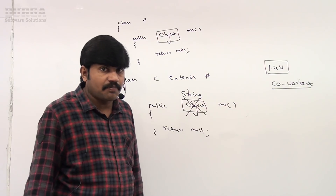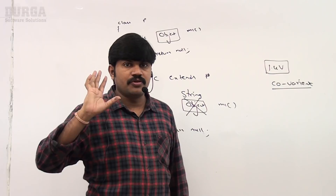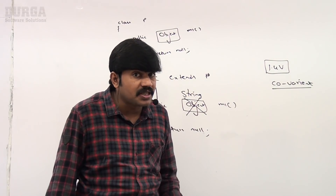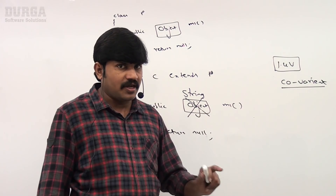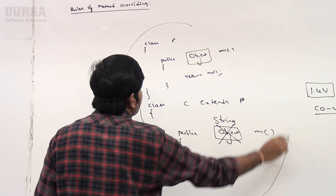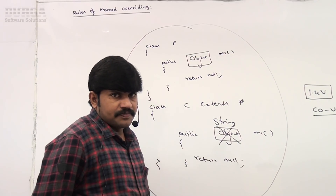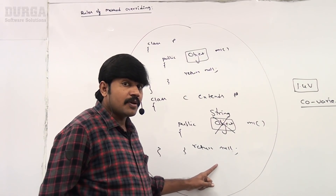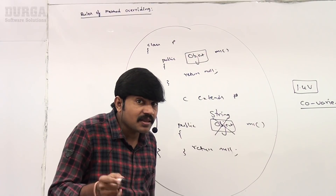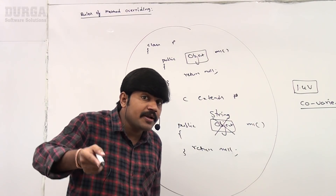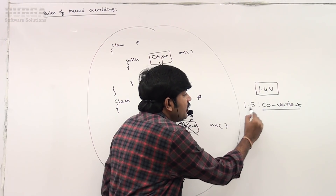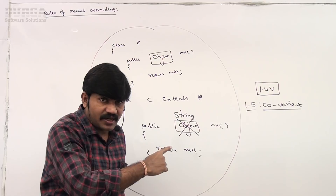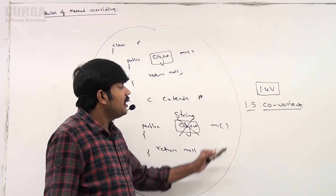So in the child class you can happily take String or StringBuffer or Integer — any child class of Object is allowed. Such return types are called covariant return types. Please note this concept is applicable only from 1.5 version onwards. Child class method return type need not be same as parent method return type; child types are also allowed.